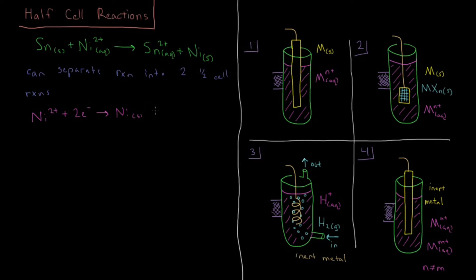That is a reduction, and we remember our mnemonic red cat, so reduction occurs at the cathode in the direction that we've drawn here.